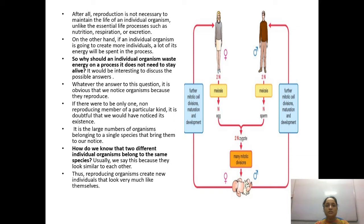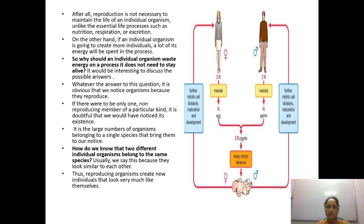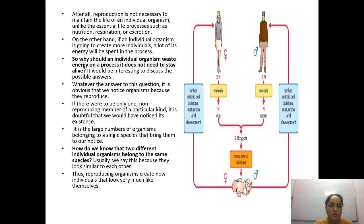After all, reproduction is not necessary to maintain the life of an individual organism — unlike nutrition, respiration, and excretion, which are essential life processes. On the other hand, if an individual organism creates more individuals, a lot of its energy will be spent during this process. So the question arises: why should an organism expend this much energy?